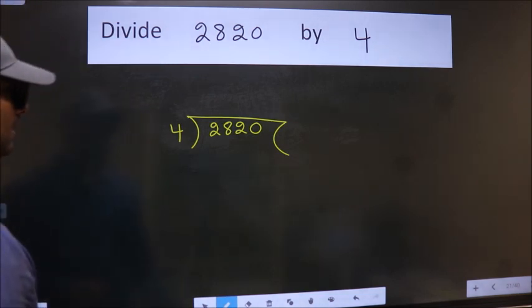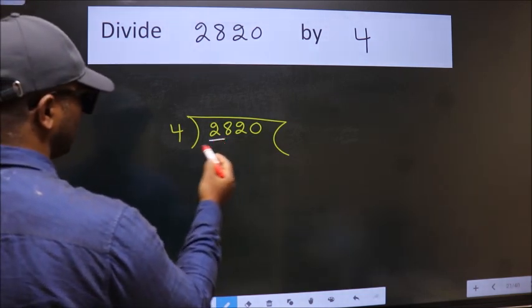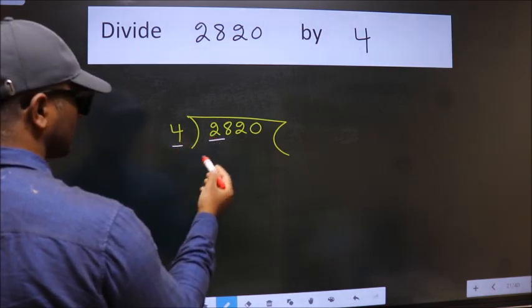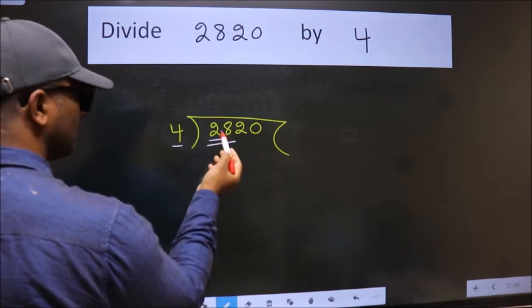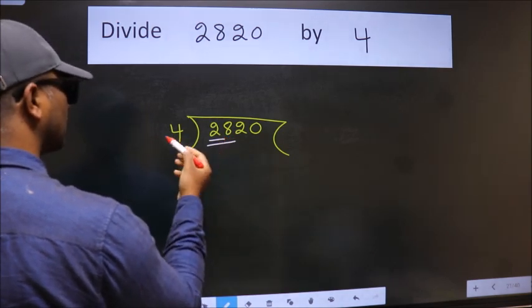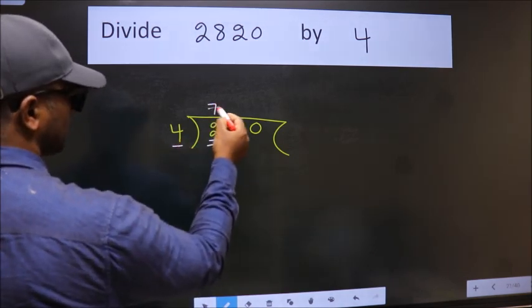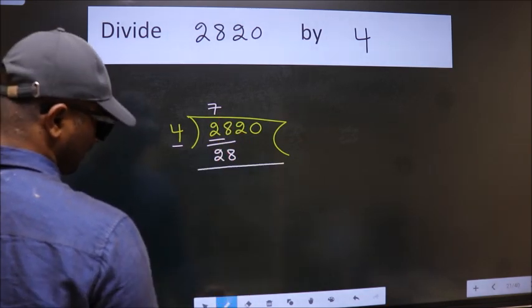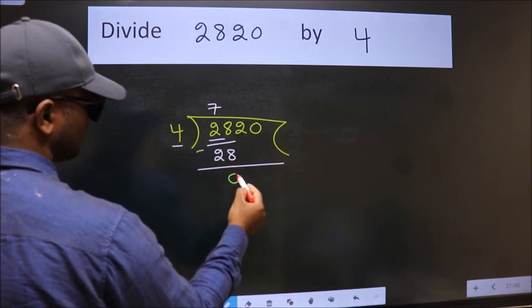Next. Here we have 2, here 4. 2 is smaller than 4, so we should take two numbers: 28. When do we get 28 in the 4 table? 4 times 7 is 28. Now we should subtract. We get 0.